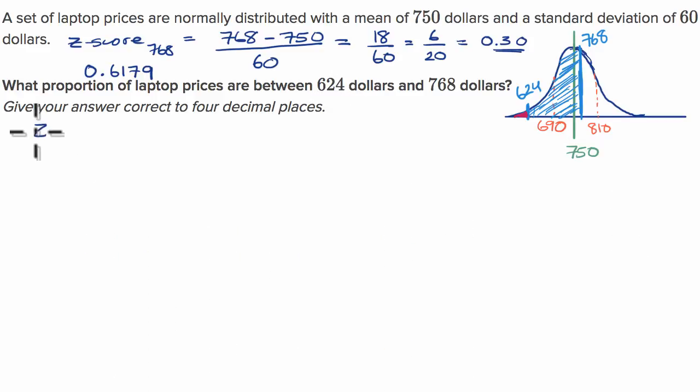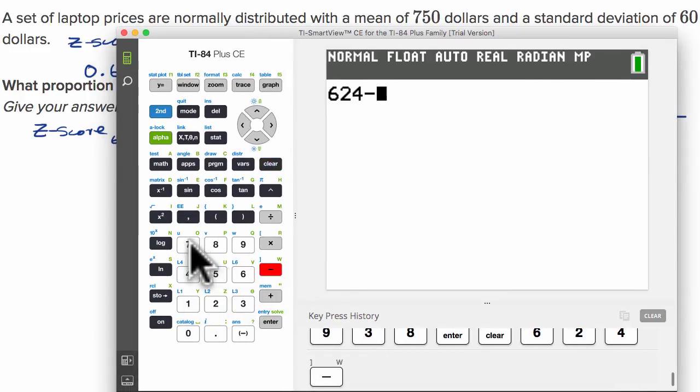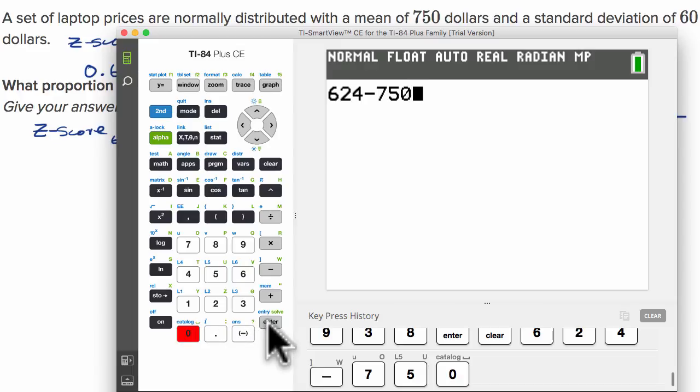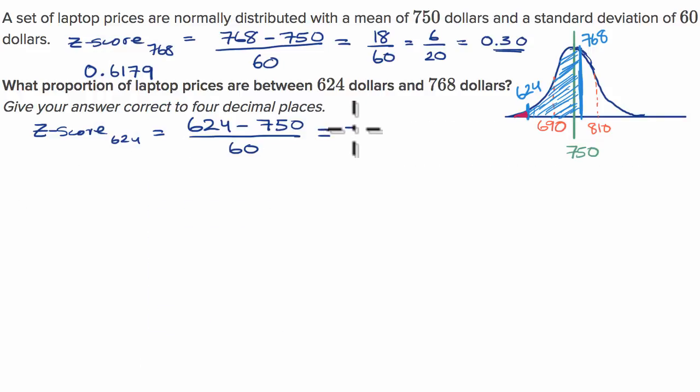The z-score for 624 is going to be 624 minus the mean of 750, all of that over 60. Let me get my calculator out for this one. 624 minus 750 equals, and then divide by 60, equals negative 2.1. So that lower bound is 2.1 standard deviations below the mean, or it has a z-score of negative 2.1.